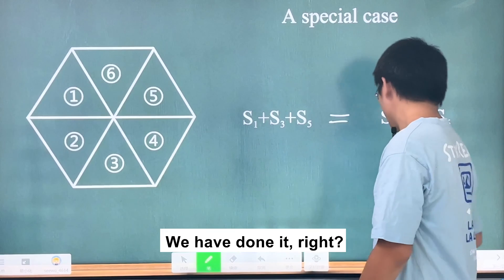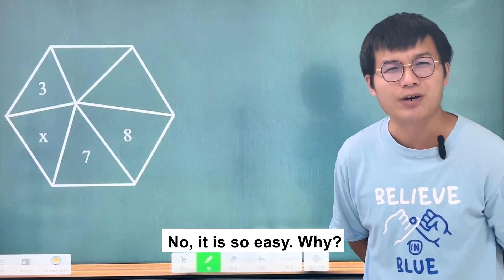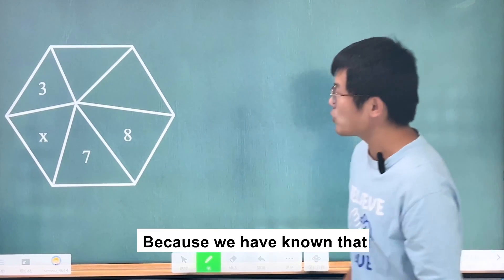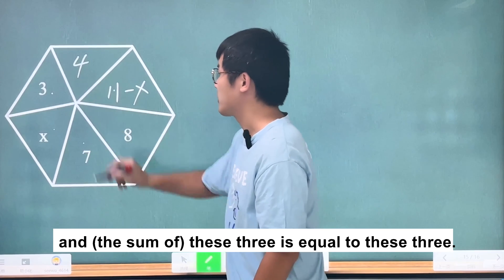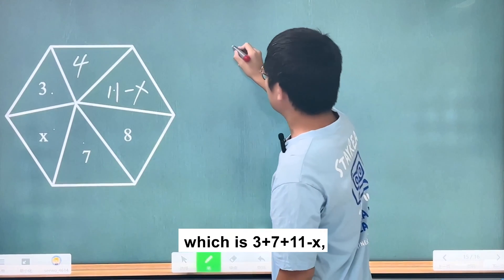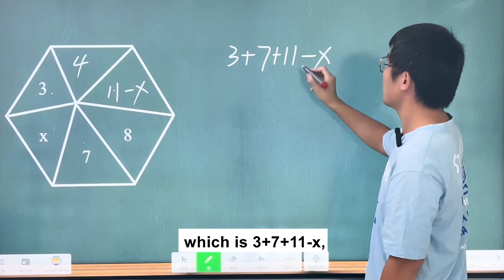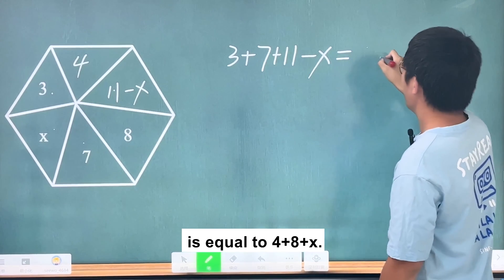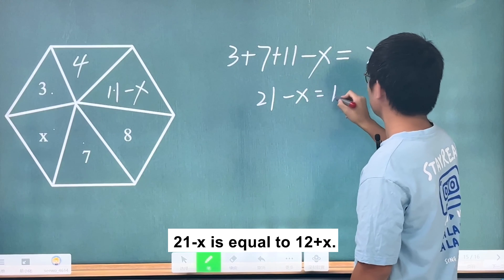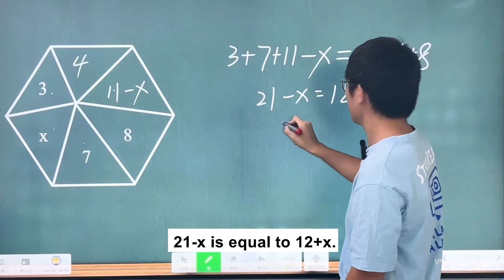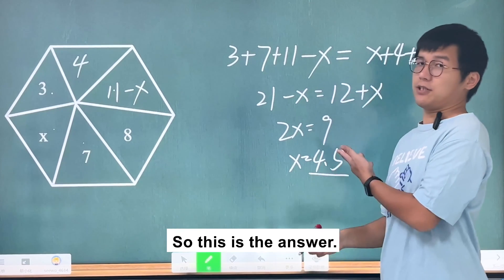Now let's go back to the original question. We have already found that one triangle is 11 minus x and another is 4, and this 3 equals the other 3. So we can list the equation: 3 plus 7 plus (11 minus x) equals x plus 4 plus 8. That gives 21 minus x equals 12 plus x. So 2x equals 9, and x equals 4.5. That's the answer!